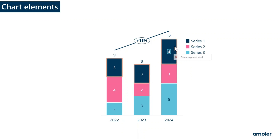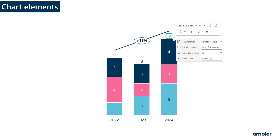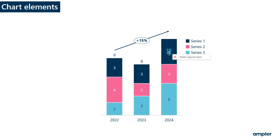Segments are a bit special — when hovering over a segment, all segments within that series show up with the orange frame. When selecting it, you'll select all segments within that given series. To select just one segment, click again and that individual segment is now selected. To remove labels or other elements, simply select the label or element and hit Backspace or Delete on the keyboard, or right-click on the label to delete the segment label.